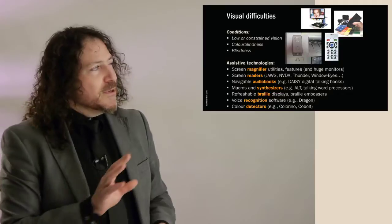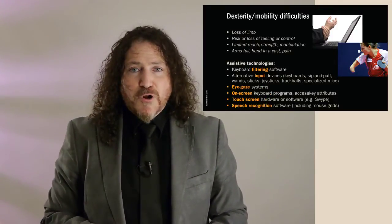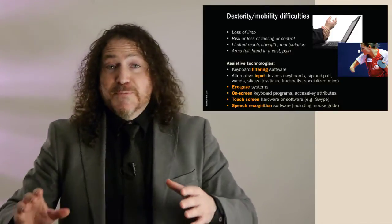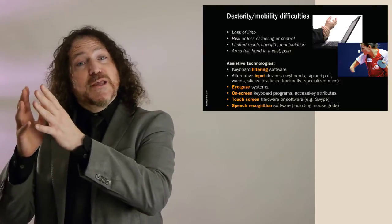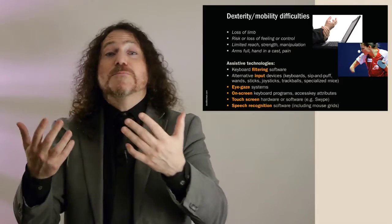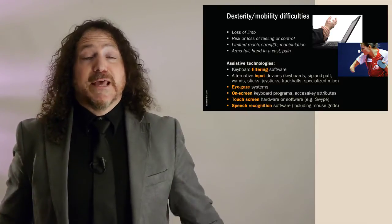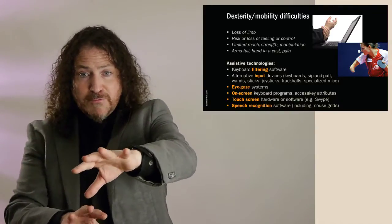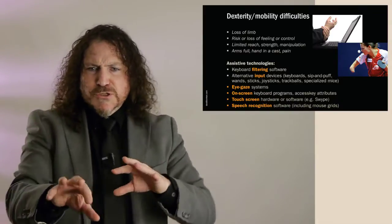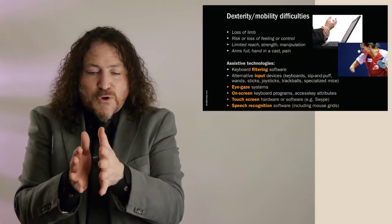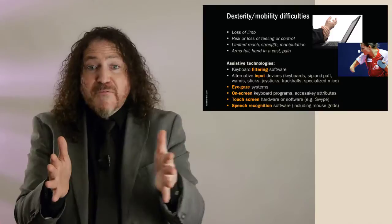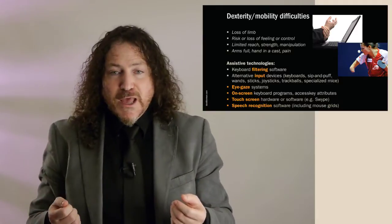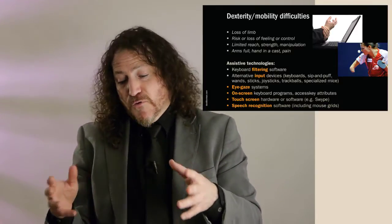The second group of challenges most prevalent when designing products online are dexterity or mobility challenges. This ranges from the extreme of someone who is quadriplegic with no use of their limbs from the neck down, to something as subtle as someone who has complete use of all their limbs but finds it hurts to move in certain ways and so prefers not to. From those two extremes, we have a continuum of mobility challenges, and again a great range of assistive technologies that help us mitigate for them.